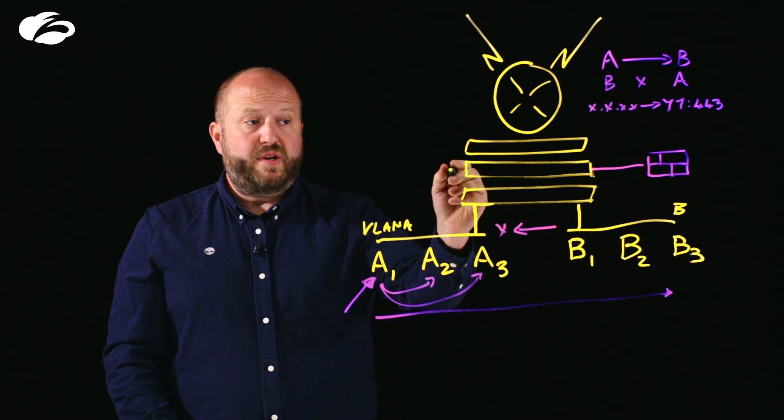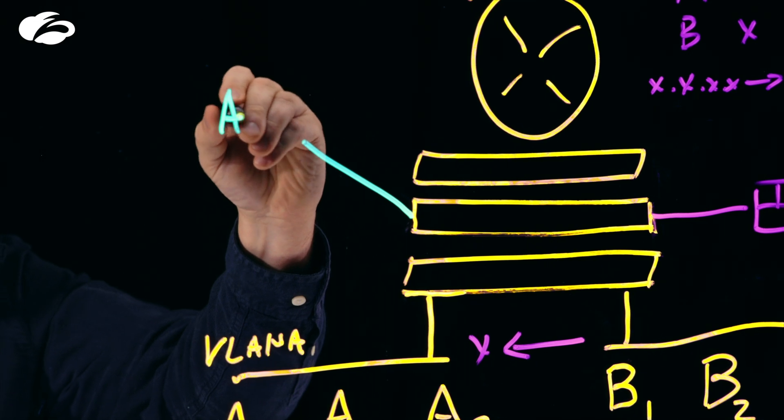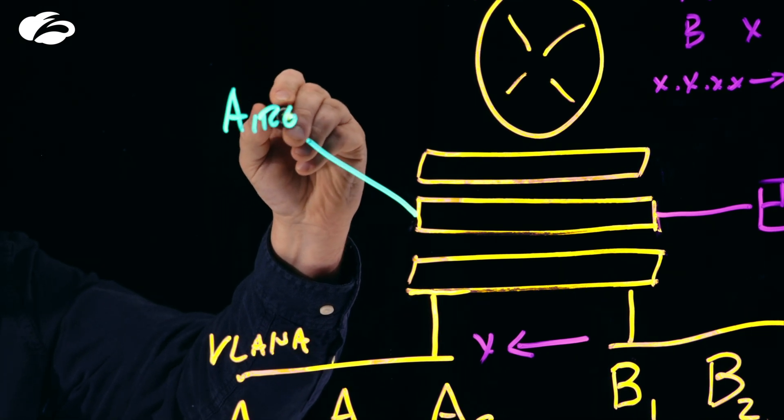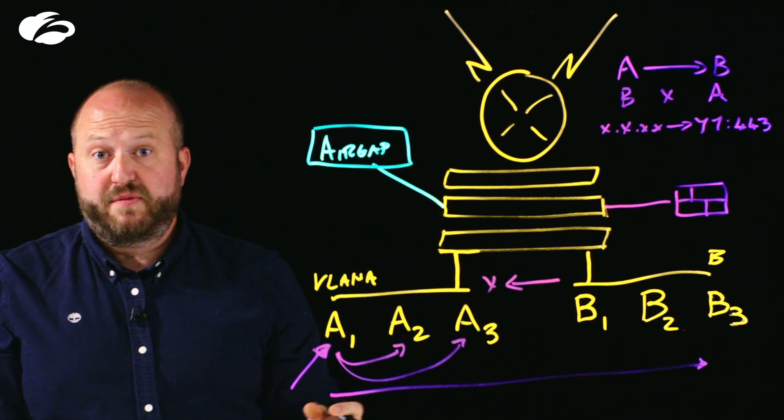So how does the air gap solution resolve this? Firstly, we deploy on your existing infrastructure, similarly to a firewall. And this can be done with either virtual or physical appliances or a mix of both.